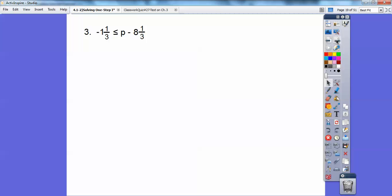Here's number 3. Don't let fractions fool you. Negative 1 and 1 third less than or equal to P minus 8 and 1 third. I'm going to add out the 8 and 1 third. The 1 thirds will cancel, and you get 7 on the left, less than or equal to P. So I'm going to flip it around. Remember, it's still pointing at 7, so make sure it's still pointing at 7 when you flip it around. And that way it tells you which way the arrows go.